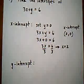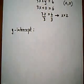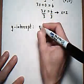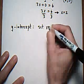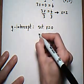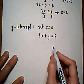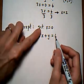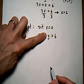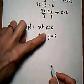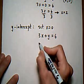And we're going to do the same thing for the y-intercept. The only difference now is we're going to set x equals 0. So again, we do 3x plus y equals 6. Start with your original equation. If x is 0, cover up that term because it's gone and you get y equals 6.